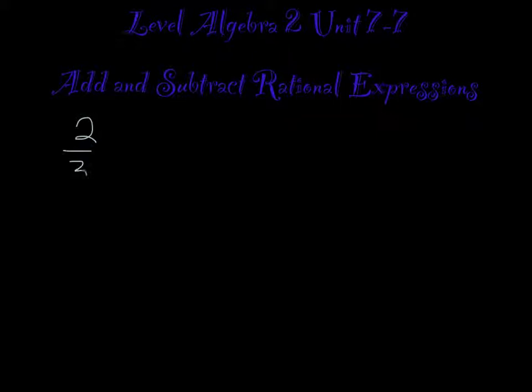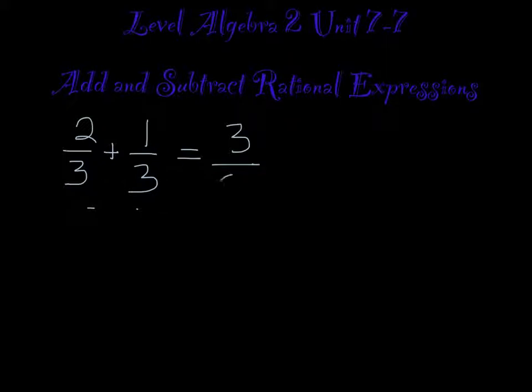We did a fractions review packet not that long ago, but let's just review. If I added 2 thirds to 1 third, then all I have to do is add across the top — 2 plus 1 is 3 — and keep a common denominator: 3 thirds. And then of course you reduce and that gives you 1.